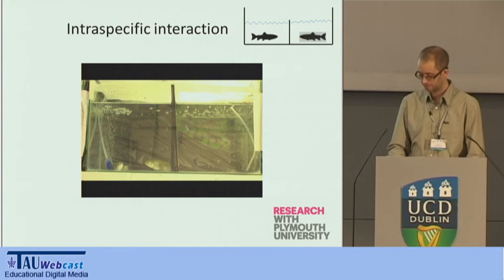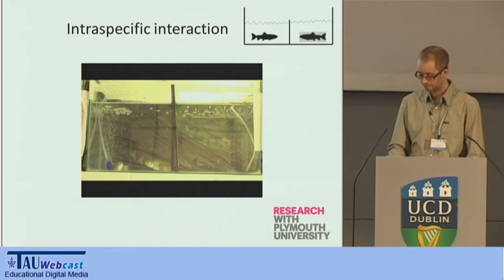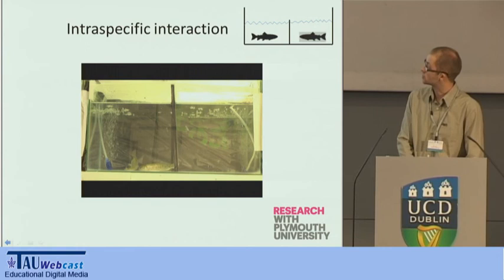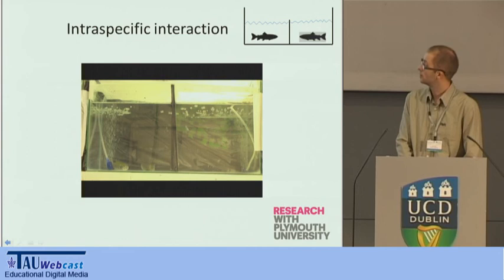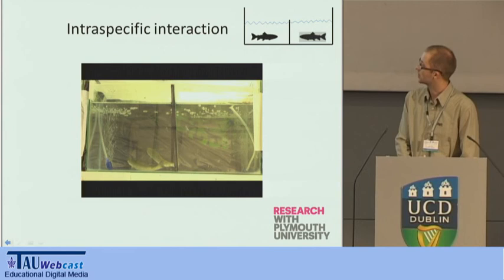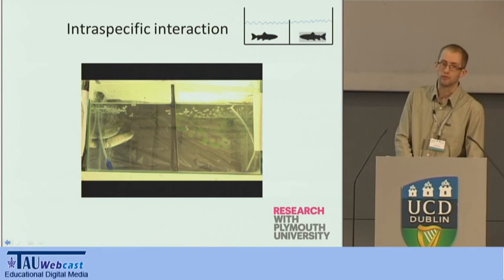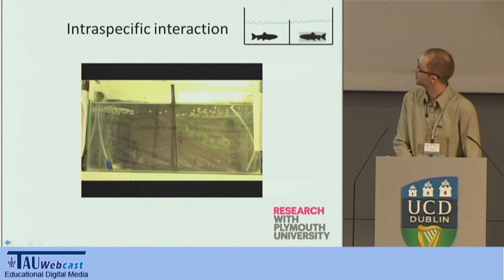We score the interaction by direct observation — recording the number of aggressive acts and when fish retreat — to determine which fish is dominant or subordinate. It's important to note that in trout hierarchies, the decision to withdraw from an interaction shouldn't come lightly, as this will reduce opportunities to feed and also to mate. This is a short video of the interactions — the barrier was removed about 30 seconds before. These fish are extremely active, undergoing a kind of feeling-out process with a number of strikes, bites, and charges. Normally after a few minutes, one fish withdraws to the surface.